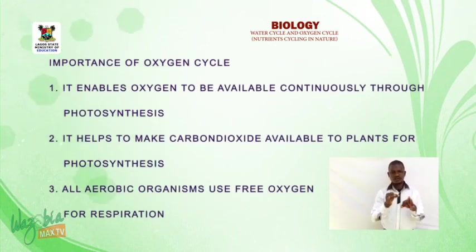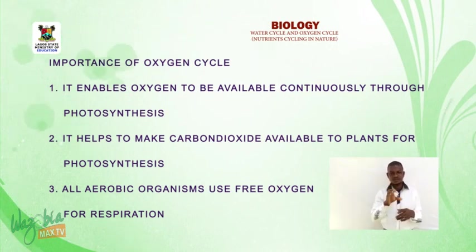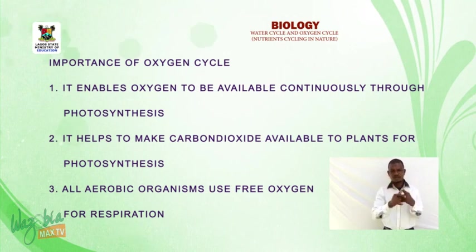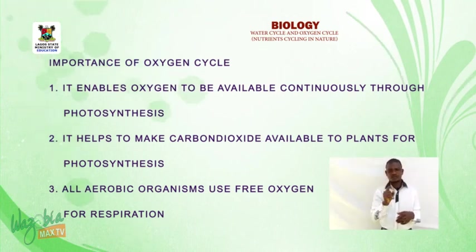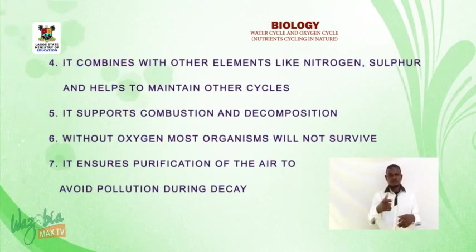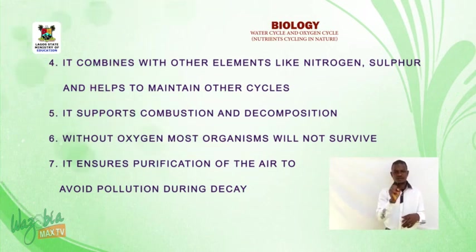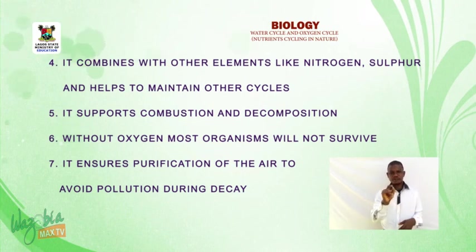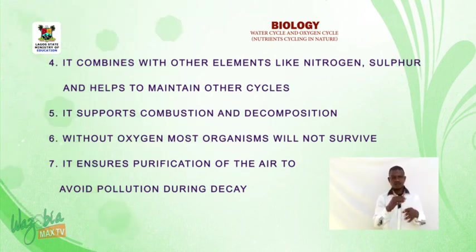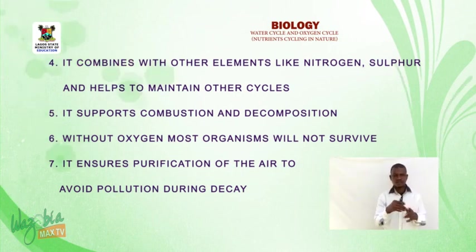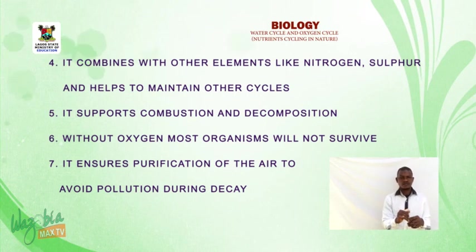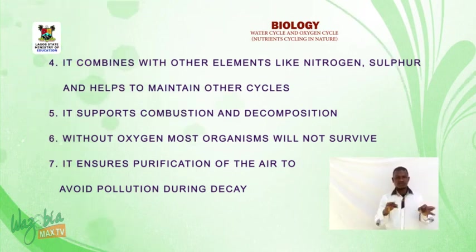Importance of oxygen cycle: it enables oxygen to be available continuously for photosynthesis. It helps to make carbon dioxide available to plants for photosynthesis. All aerobic organisms use free oxygen for respiration. It combines with other elements like nitrogen and sulfur and helps to maintain other cycles. It supports combustion and decomposition. Without oxygen, most organisms will not survive. It ensures purification of the air to avoid pollution during decay.